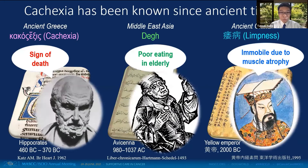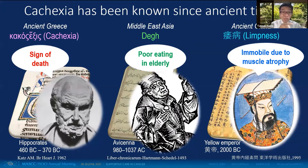Wasting condition caused by various chronic diseases has been known since ancient times in many parts of the world. They called it by different names. In ancient Greece, Hippocrates called it cachexia and considered it as a sign of death.